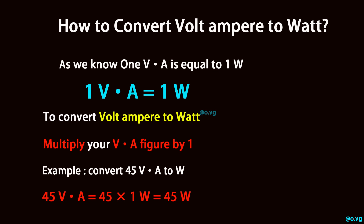Convert 45 volt-ampere to watt. 45 volt-ampere is equal to 45 times 1 watt, which equals 45 watt.